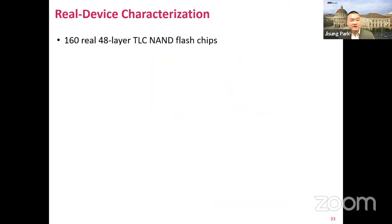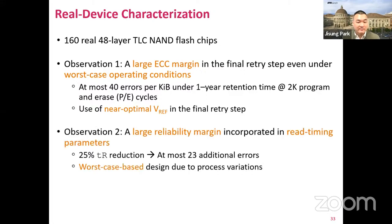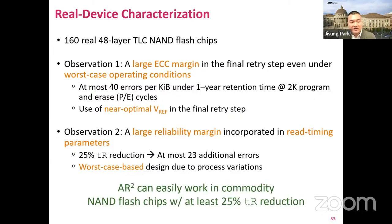We validated the feasibility of AR2 using 160 real TLC NAND flash chips, and we observe a large ECC margin in the final retry step even under worst-case operating conditions due to the use of near-optimal read-reference voltage. There is also a large timing margin that manufacturers incorporate into read timing parameters, considering worst-case operating scenarios. We conclude that AR2 can easily work in commodity NAND flash chips, enabling at least a 25% reduction of the page sensing latency for every retry step.